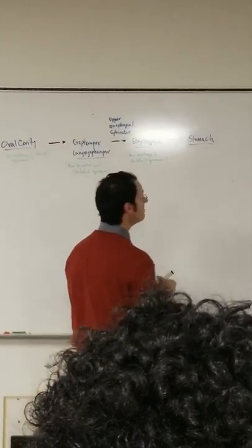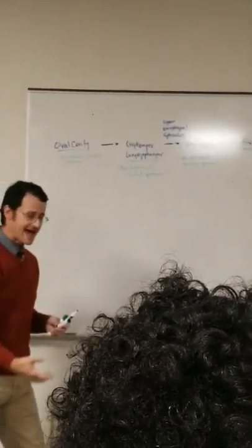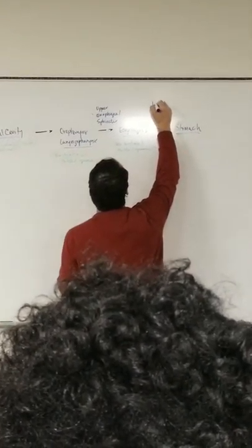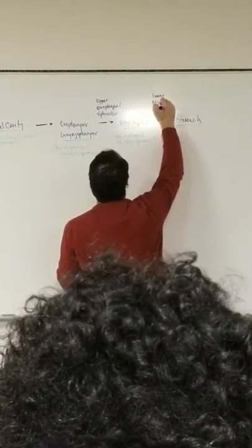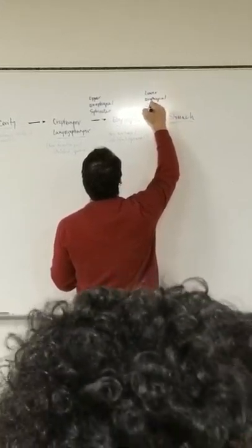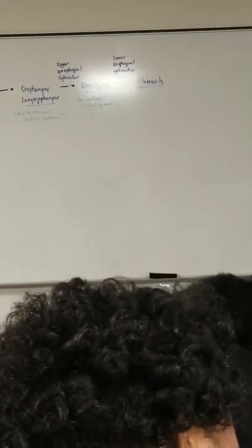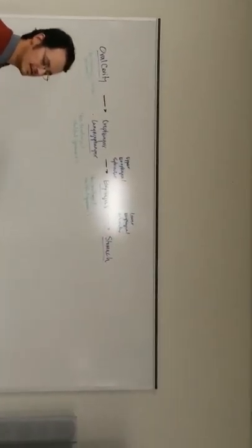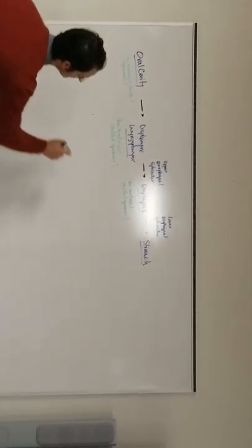There is another sphincter that relaxes to permit the bite of food to pass down into the stomach. We call it the lower esophageal sphincter, also sometimes called the gastroesophageal sphincter. The lower esophageal sphincter allows passage down into the stomach.